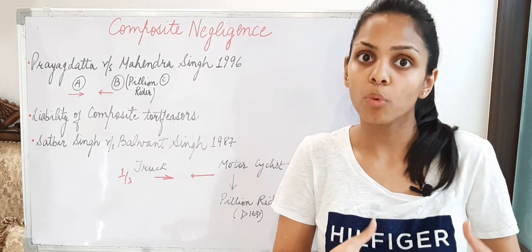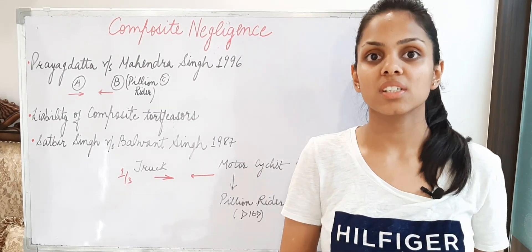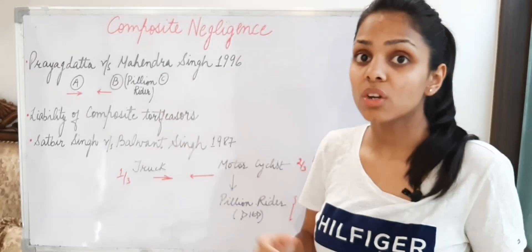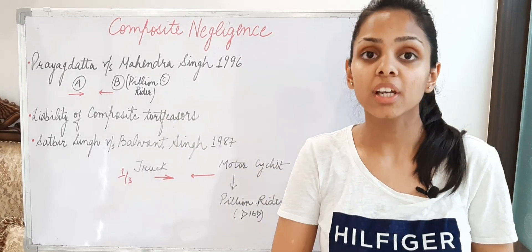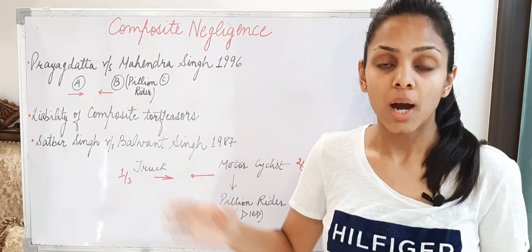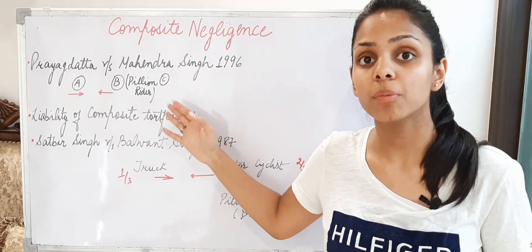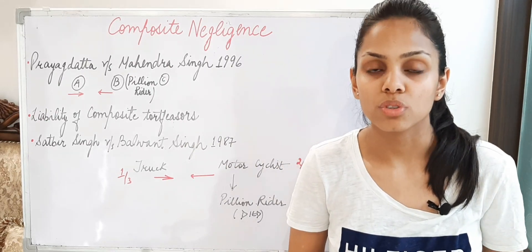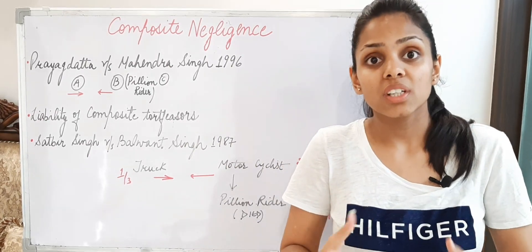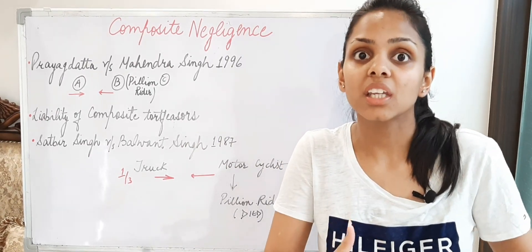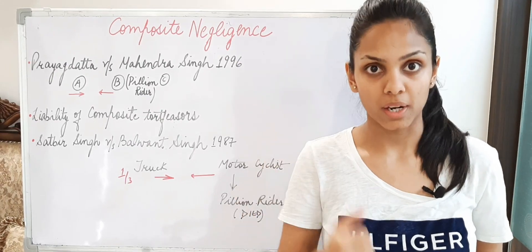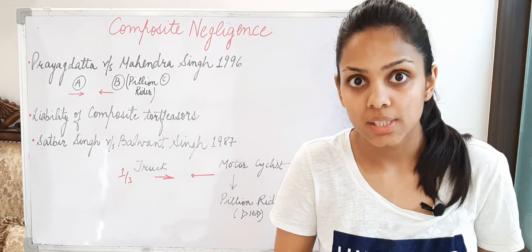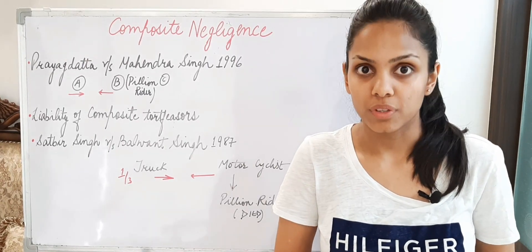There may be two or more than two people whose negligence causes injury to this person. Now in this case, a question of their liability arises — definitely a question of liability will arise. Now this C — the deceased's legal representatives — the plaintiff party — will definitely claim compensation. The question that arises is: which person will pay how much compensation to the aggrieved party? A question of liability arises in the case of composite tortfeasors.